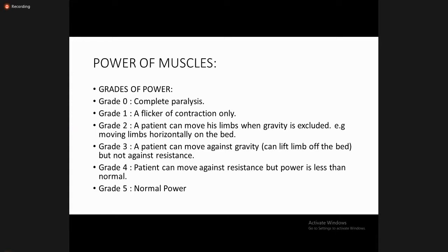Grade two means the patient can move the limb when gravity is excluded — moving limbs horizontally on the bed but not against gravity. Grade three means the patient can move against gravity and can lift the limb off the bed, but not against resistance. Grade four means the patient can move against resistance but power is less than normal. Grade five is normal power.